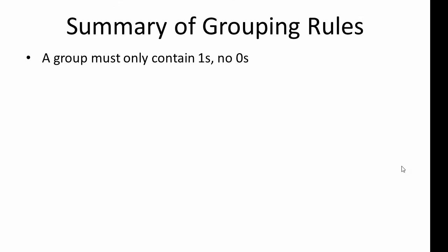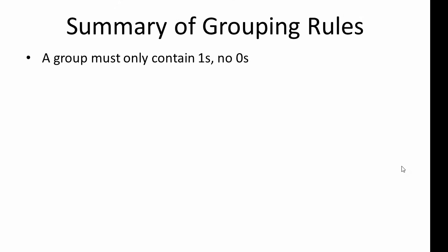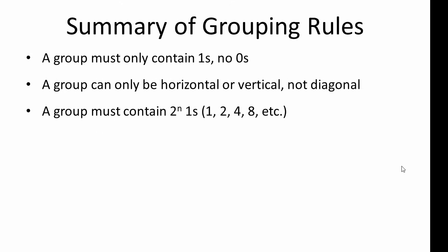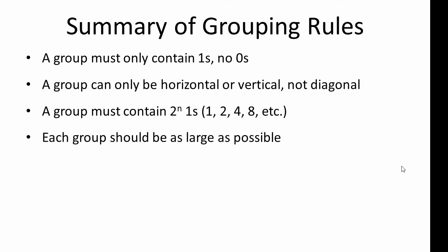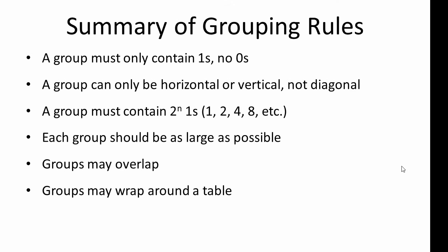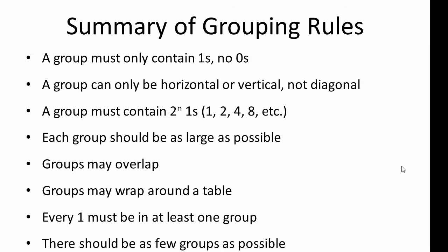To finish, here's a summary of the rules for identifying groups in a K-map. A group must only contain ones — no zeros. A group can only be horizontal or vertical, not diagonal. A group must contain 2 to the power n ones, for example 1, 2, 4, or 8. Each group should be as large as possible. Groups can overlap and groups can wrap around a table. Every one must be in at least one group. And finally, there should be as few groups as possible.